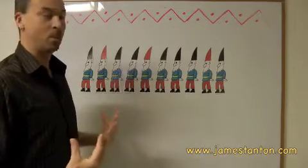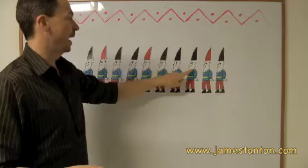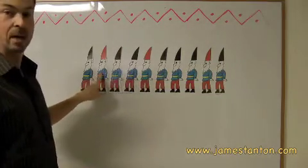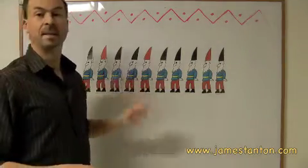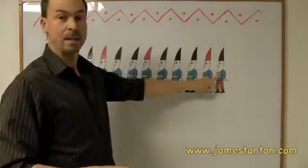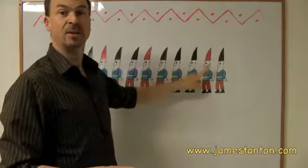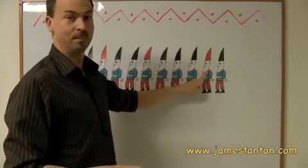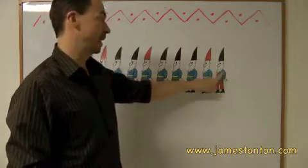Now for example, maybe one plan will be that gnomes ten, eight, six, four, and two will agree to say the color they see in front of them. For example, gnome number ten might say red, because he sees a red hat in front of him, just so that gnome number nine knows his hat is red. But in this case, gnome number ten dies.